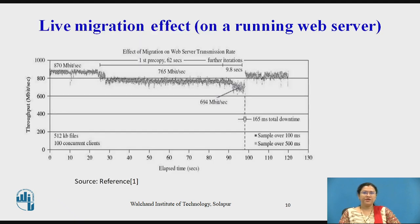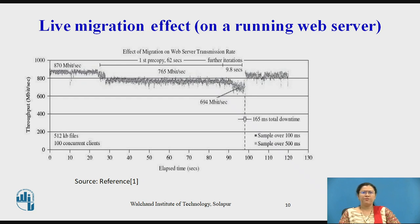Now we will see the live migration effect on a running web server. This diagram shows a graphical representation of an emulation of the above migration, run on an Apache 1.3 web server serving static content at a high rate. The throughput is achieved when continuously serving a single 512 KB file to 100 concurrent clients. The server virtual machine has a memory allocation of 800 MB. At the initial trace, the server achieves a consistent throughput of 870 Mbps.